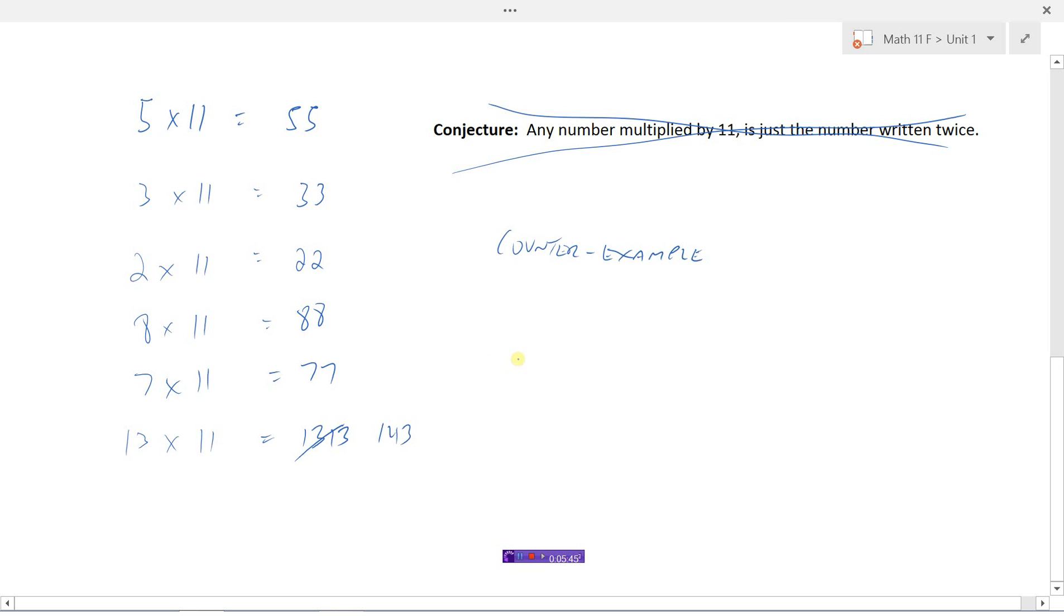Against what I've been doing here. So as soon as you find a counter example, even if it's just one, your conjecture cannot be true because you've just found something that doesn't work.